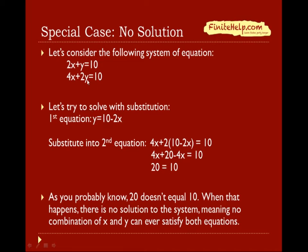I substitute the y into the second equation. And then, I do the algebra. And I find out that 20 equals 10. Well, as you probably know, 20 doesn't equal 10. When that happens, there is no solution to the system. Because 20 will never equal 10. No combination of x and y can ever satisfy both of these equations.